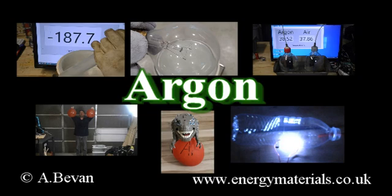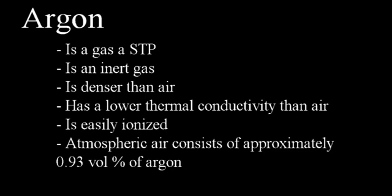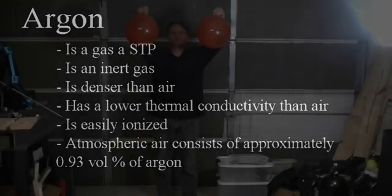This is a demonstration video looking at some of the characteristics of argon. Some of those characteristics of argon gas include: argon is a gas at normal temperature and pressure, argon is considered to be an inert gas, it is denser than air, has a lower thermal conductivity than air, is easily ionized, and occupies approximately 0.93% of the volume of atmospheric air.